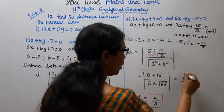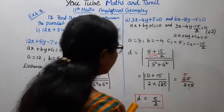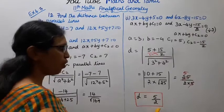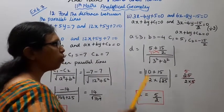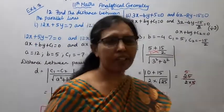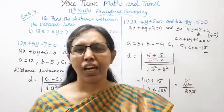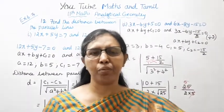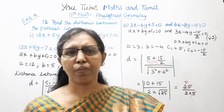5 plus 5 is 25. Answer for second subdivision: D equal to 5 by 2. This channel helps you to get 100 marks. Subscribe to the videos, click the bell button.